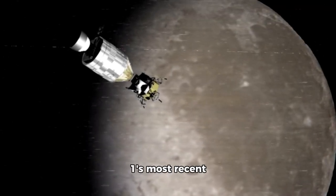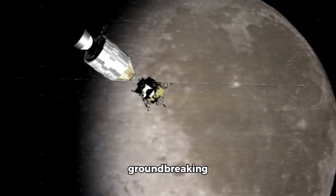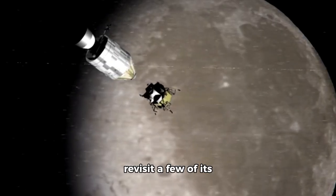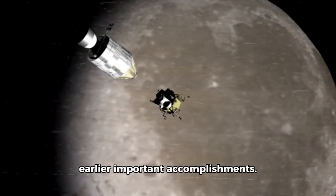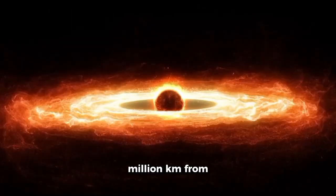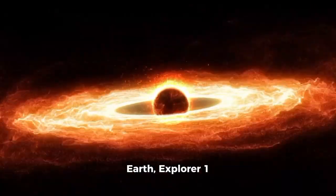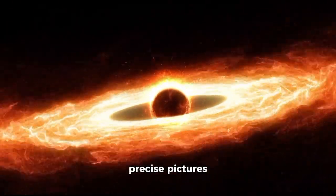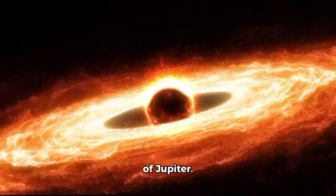Before entering Explorer 1's most recent groundbreaking discoveries, let's revisit a few of its earlier important accomplishments. In 1978, when it was about 265 million kilometers from Earth, Explorer 1 successfully took precise pictures of Jupiter.